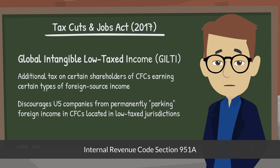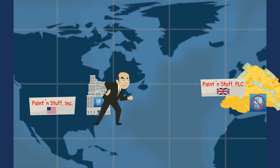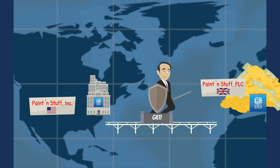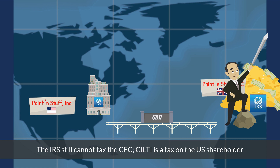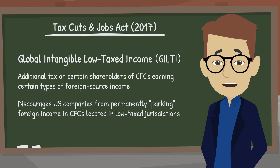Finally, the global intangible low-taxed income provision, GILTI, essentially imposes a minimum tax on a U.S. company's worldwide income. Simplistically, GILTI imposes an additional tax on certain U.S. shareholders based on their worldwide income earned through CFCs, regardless of whether or when that foreign source income is returned to the U.S. as a dividend. GILTI basically tries to prevent large U.S. companies from keeping foreign source earnings outside the reach of the IRS by keeping it offshore in a CFC indefinitely. Congress also saw GILTI as a way of making the U.S. parent tax-indifferent as to whether the CFC's earnings should be invested abroad or instead paid immediately to the U.S. parent as a dividend and reinvested here.